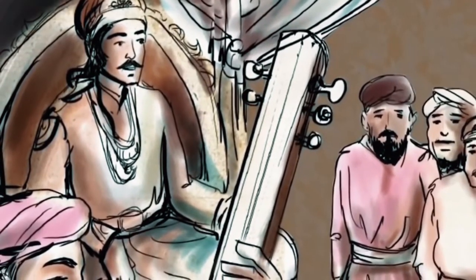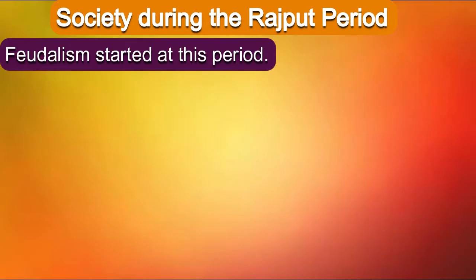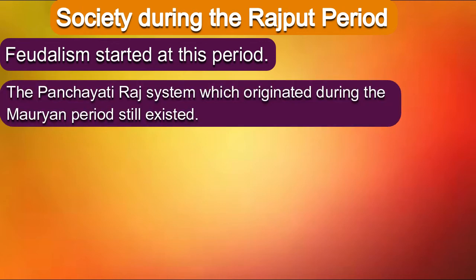Let's know about the society during the Rajput period. Feudalism started at this time. Feudalism means Samantwad, in which landlords gave their land to small feudal lords or zamindars for cultivation. In return, these feudal lords or zamindars gave landlords a fixed income every year. The Panchayatira system which originated during the Mauryan period still existed in this time.